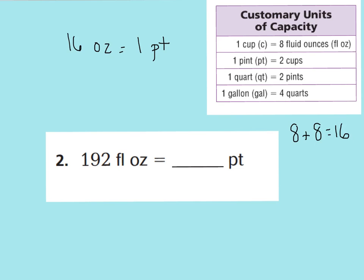If I'm going from a small measurement to a larger measurement, I'm going to have less of these because they're bigger. Therefore, I will be dividing. So my equation is going to be 192 divided by 16 ounces, which will tell me how many pints. Remember, there are 16 ounces in one pint.